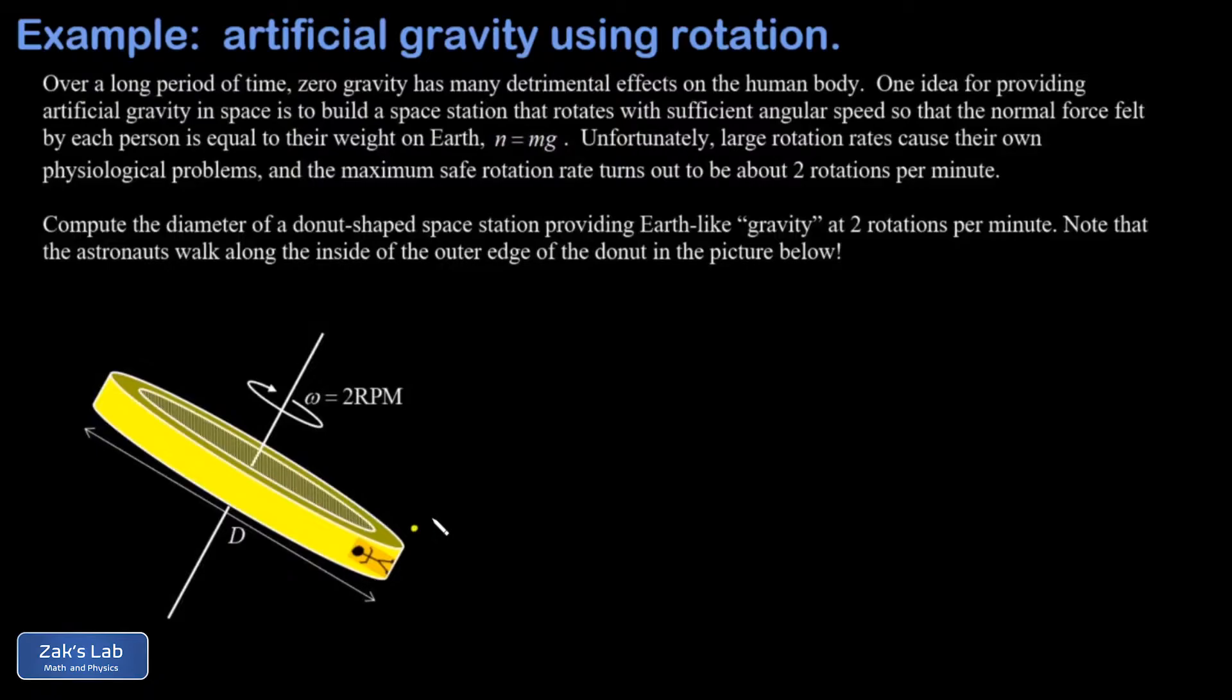In order to move in this circular motion, those astronauts must feel a normal force pointing to the center of curvature in order to provide the centripetal acceleration. Now, if we can spin this thing at just the right rate so that that normal force is equal to mg...